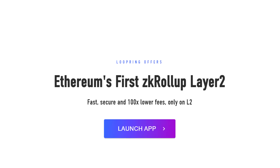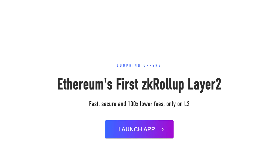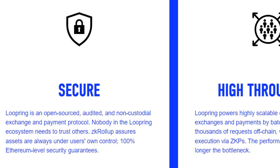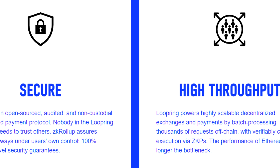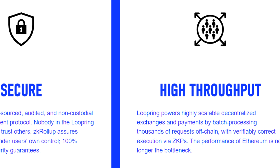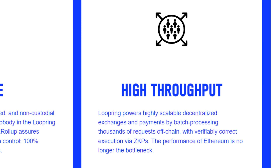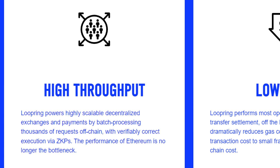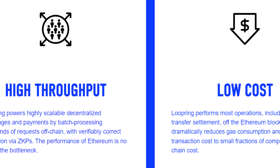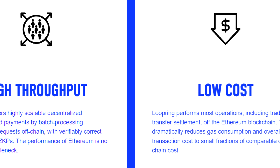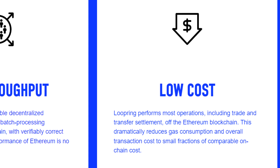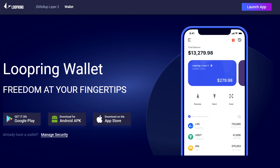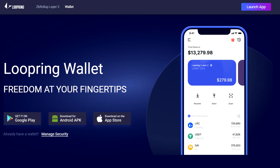Loopring builds the tools to allow anyone to live in a parallel financial system while never sacrificing self-sovereignty and security. They are Ethereum's longest running roll-up, hyper-scaling DeFi, payments, and NFTs. The Loopring chain does many things: AMM swaps, order book trades, payments, and NFT minting and trading. Their wallet provides additional security like social recovery and guardians. It is a multi-signature wallet with other additional features.